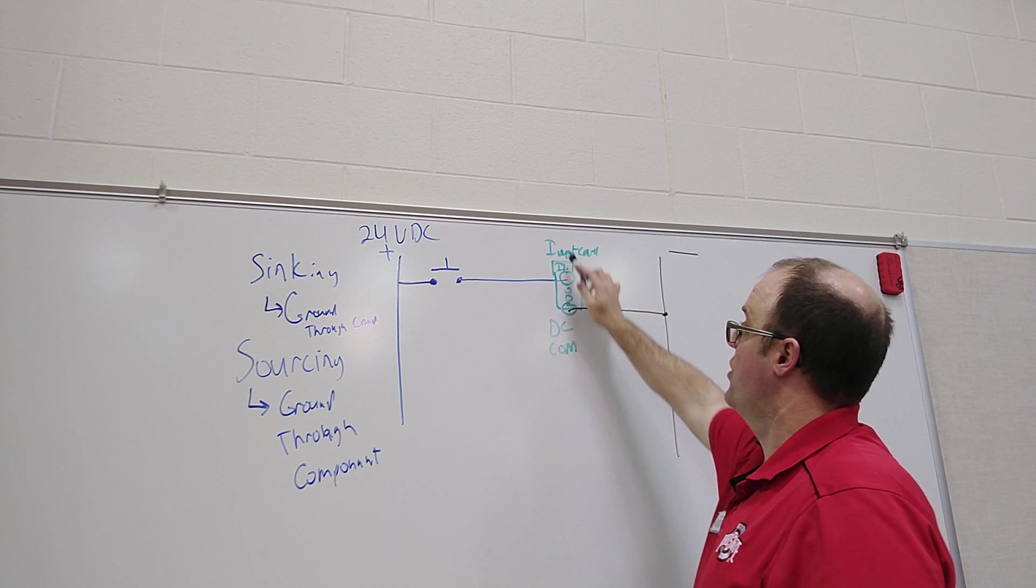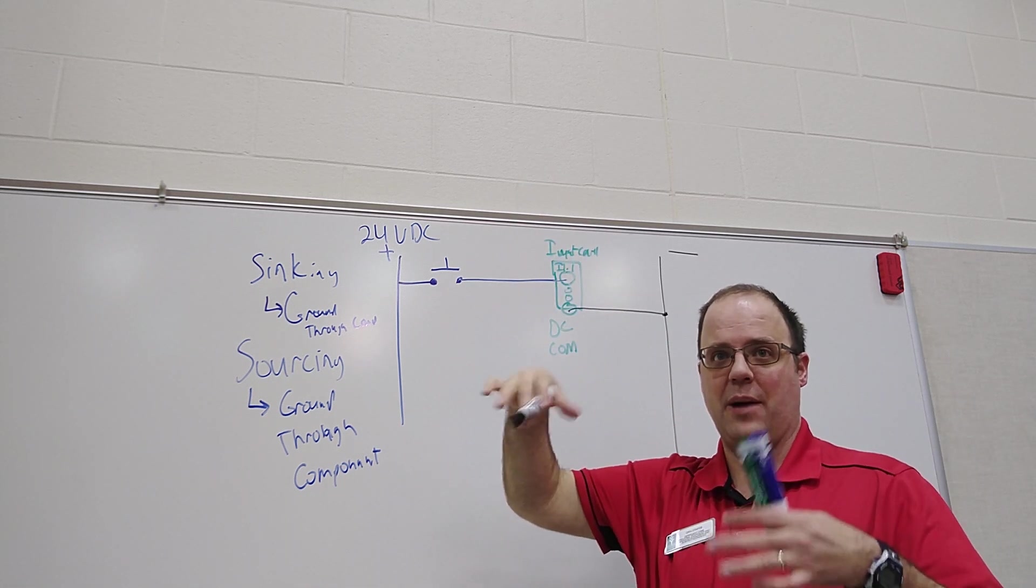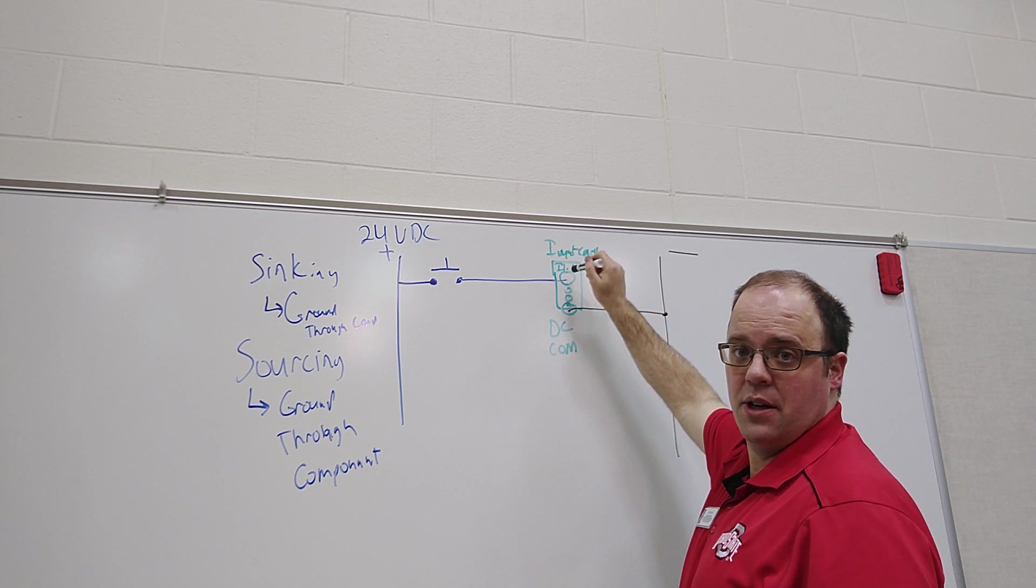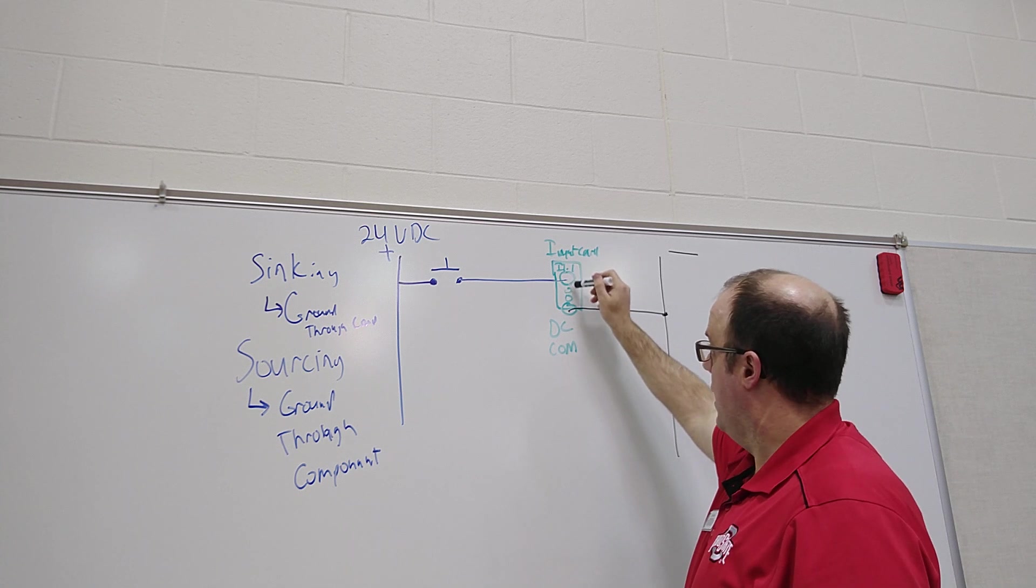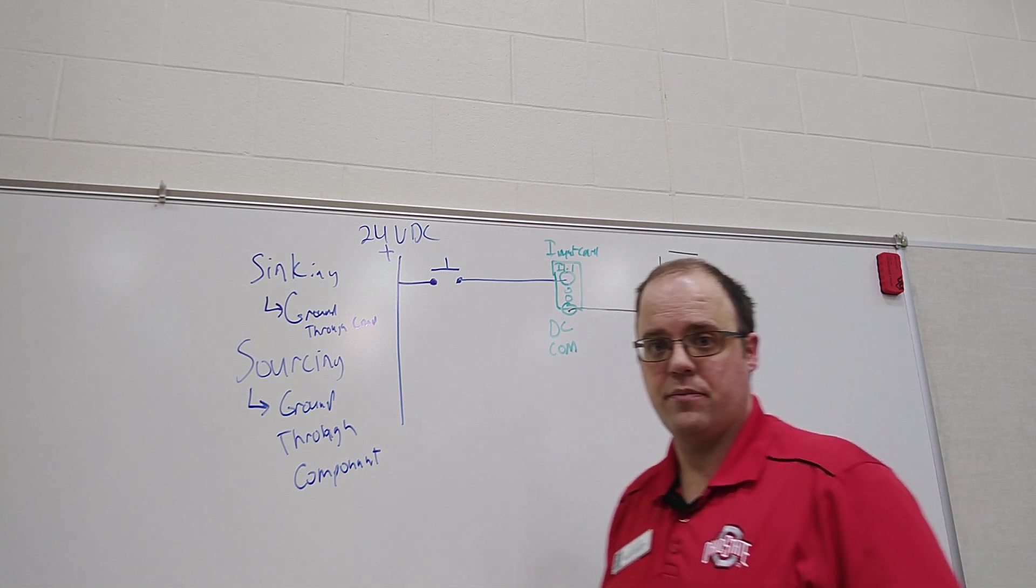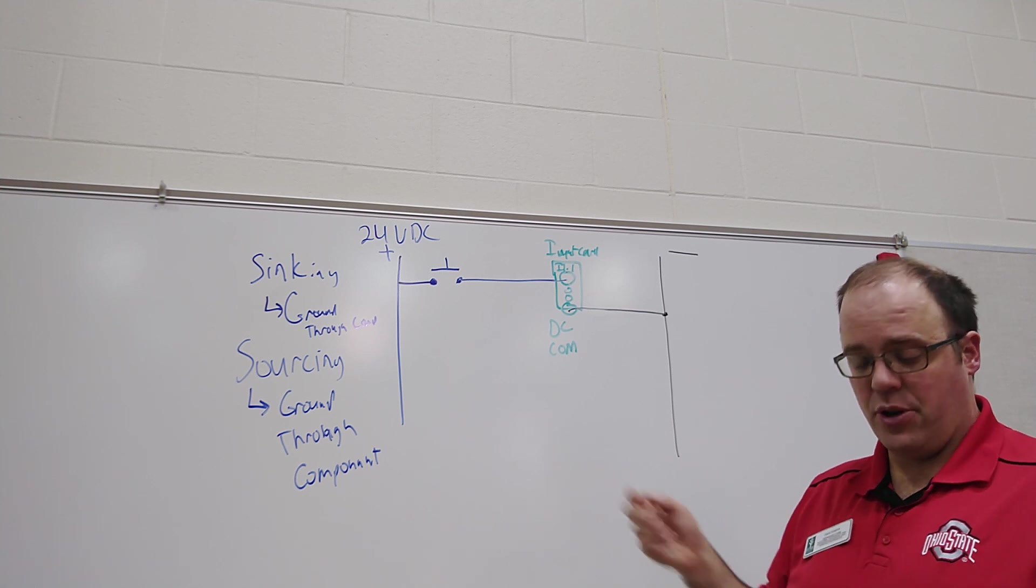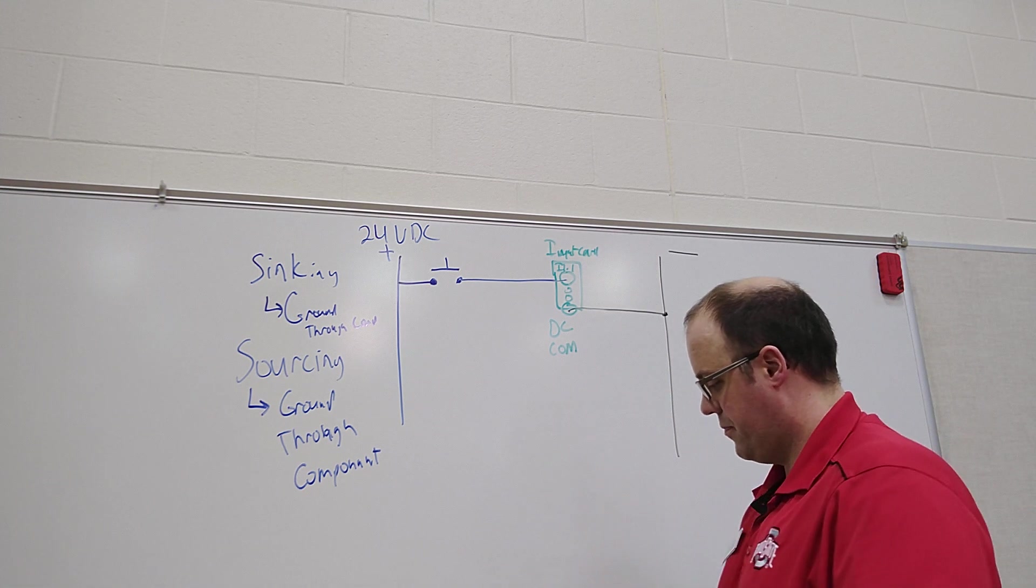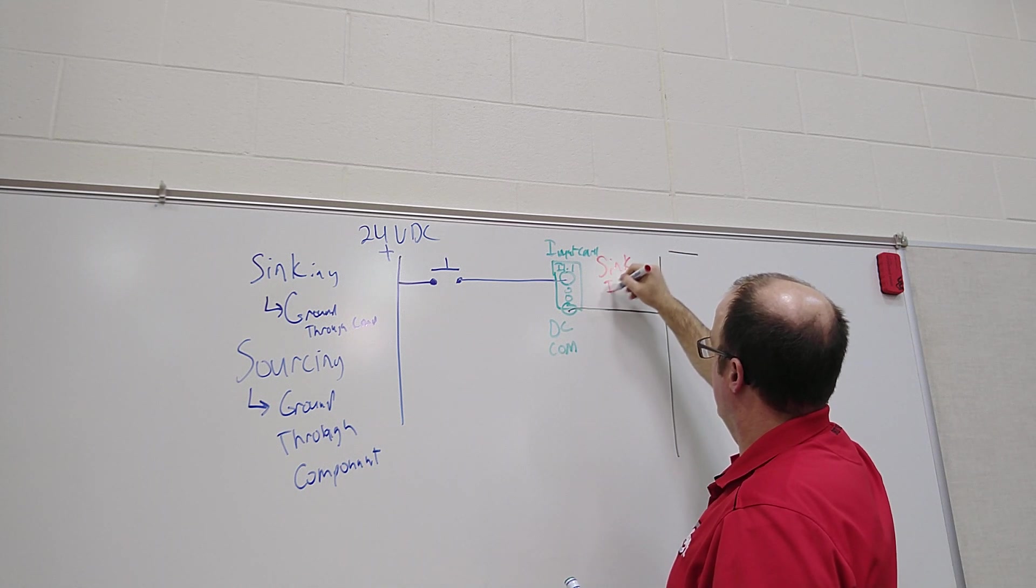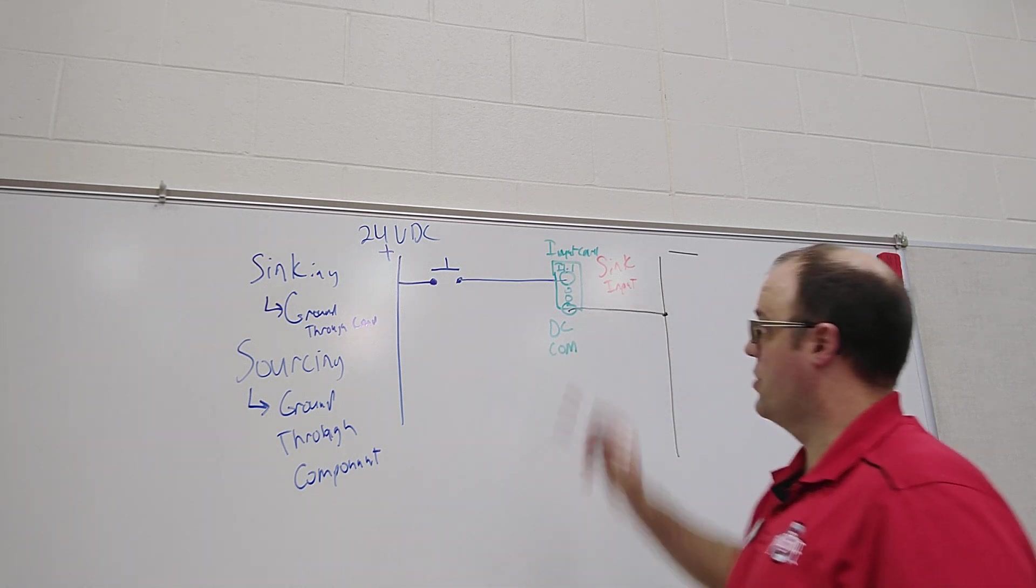Because what this is effectively doing is when I push this button 24 volts gets sent to this input card. When it recognizes 24 volts the light, an optical sensor gets tripped because it's all optically isolated and a light turns on on the input card that corresponds to this terminal number because then the power will go to ground to complete the circuit. So this is considered how you would wire up a sinking input card. And generally speaking in the United States this is how we do things.